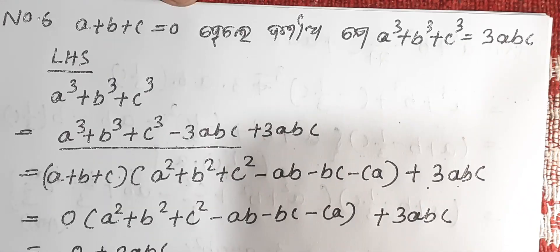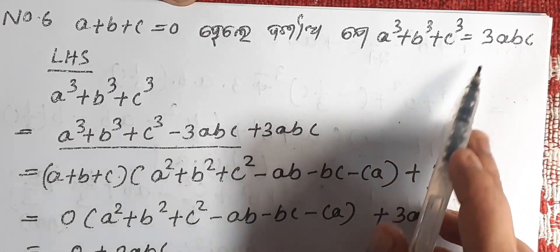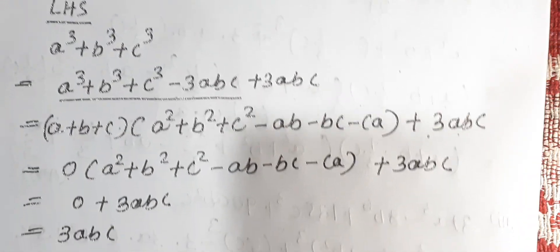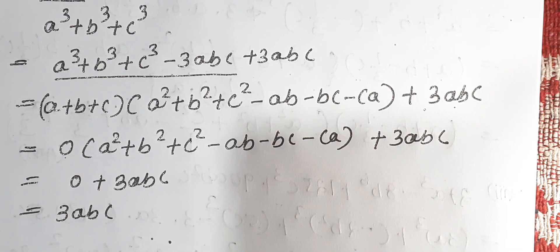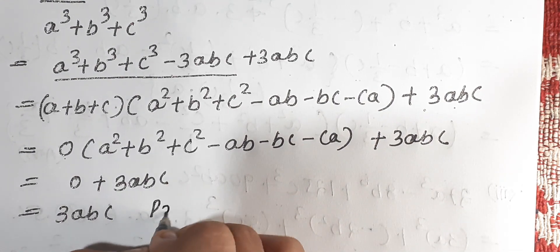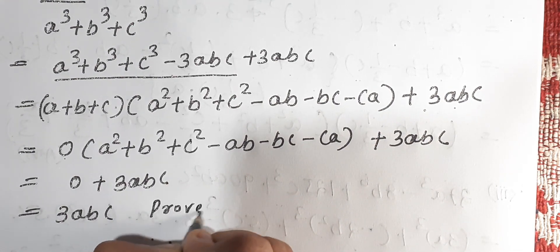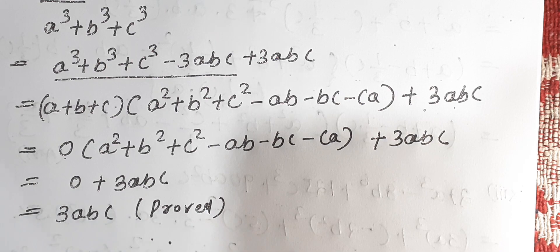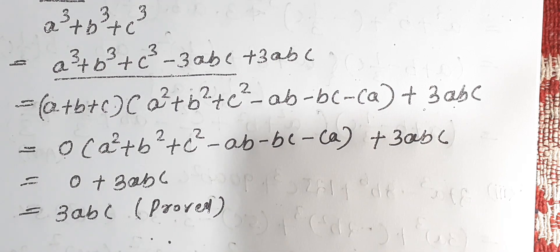So RHS: 3ABC is equal to 3ABC. Hence proved. Next question.